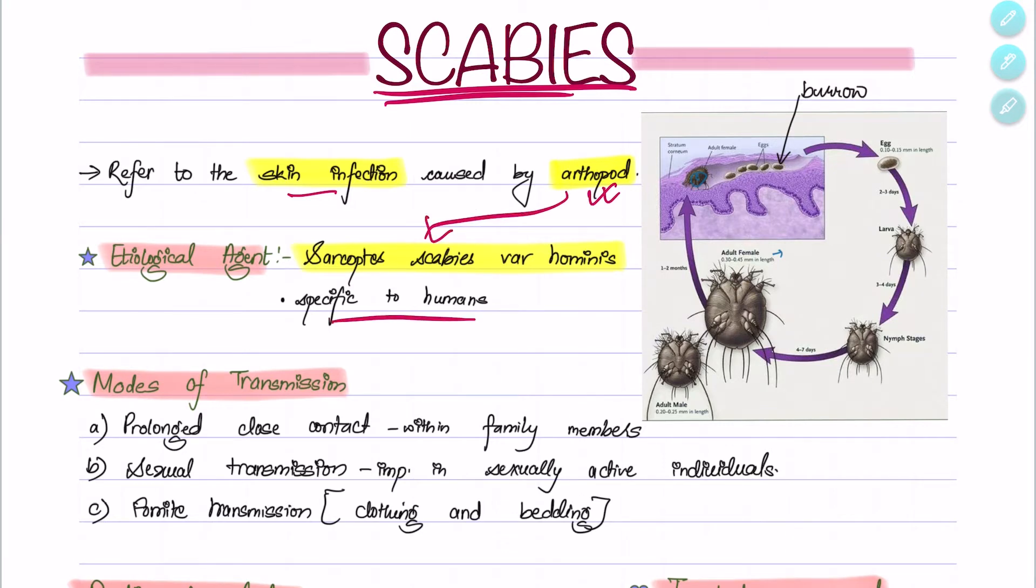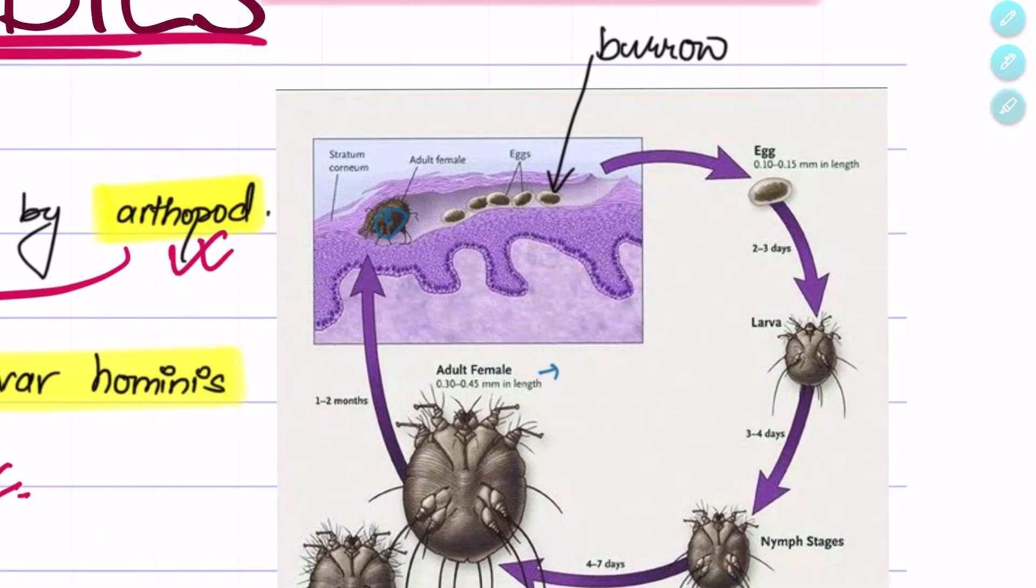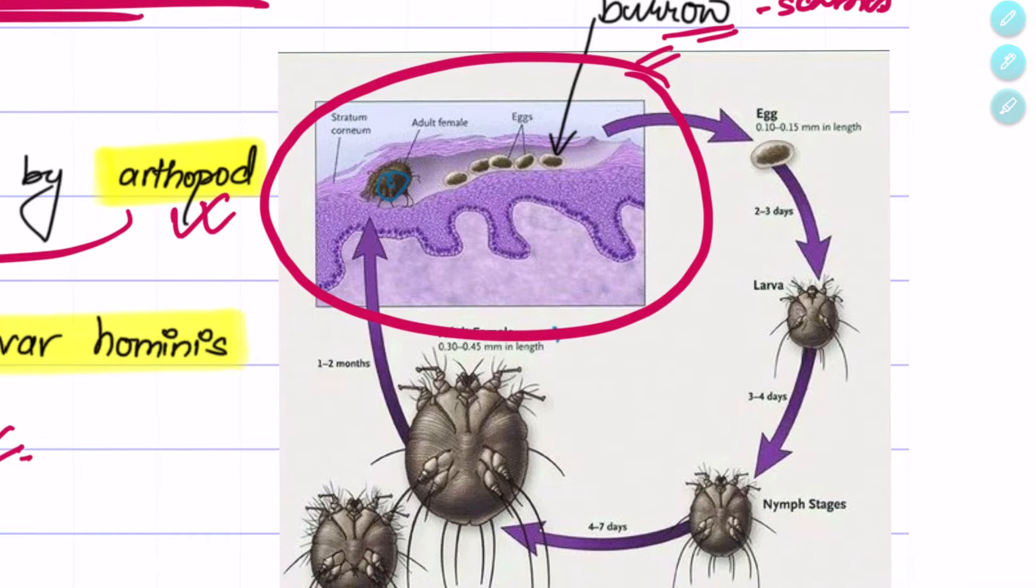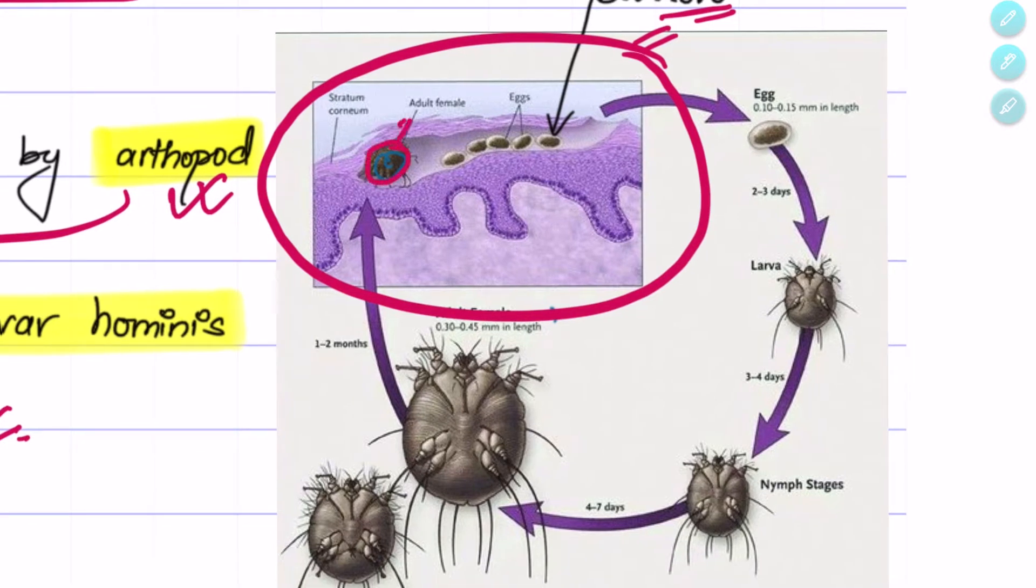This arthropod or mite is specific to humans. In this picture we can see a burrow, which is the pathological or characteristic lesion seen in scabies. In this burrow we can find the adult female mite itself, the eggs, as well as some feces.